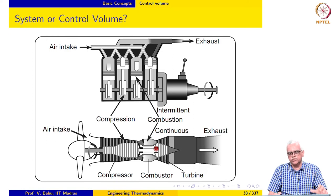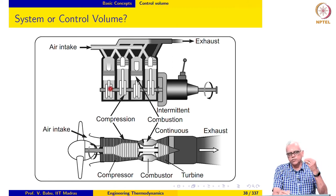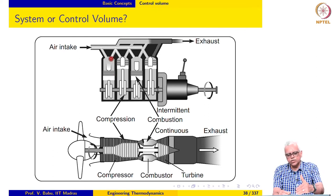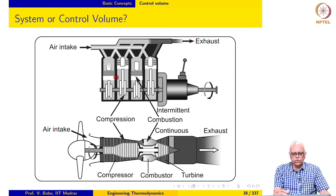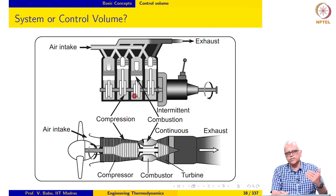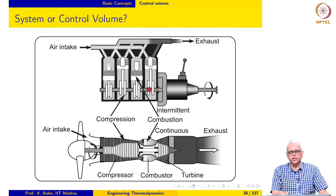In the IC engine, a fixed mass of air is taken into each cylinder. The valves close, the air is compressed, fuel is injected and burned, and the air expands pushing the piston down to produce power. Then the piston moves back up, the exhaust valve opens, and exhaust gases are pushed out. So a fixed amount of air in each cylinder executes the four processes in sequence — it is a cyclic process. The power produced is intermittent because it occurs only once every four strokes, so more cylinders are added for more power and smoother flow.